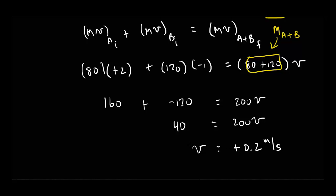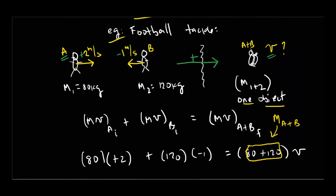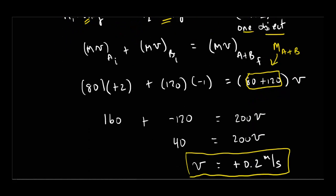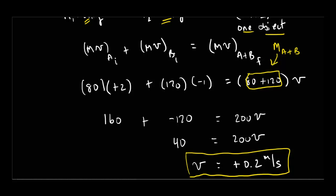The positive result means they move in the direction of player A — to the right. Player A wins the collision, not because he's heavier — player B actually has a greater mass — but because player A is moving twice as fast, giving him more momentum. Together, they collide and move to the right at 0.2 meters per second.